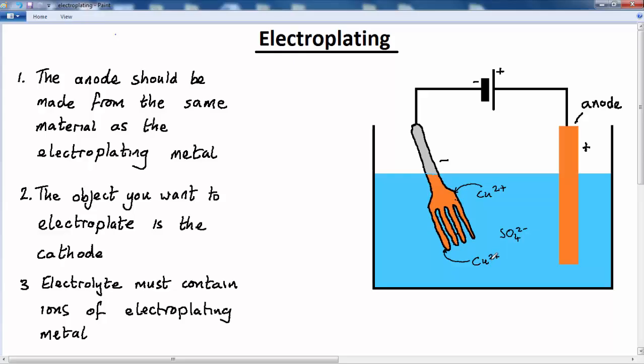And as the copper two plus ions are used up in the copper sulphate solution, the copper anode will start to dissolve in the solution to replace the copper two ions that have been used up. So this copper anode will slowly start to dissolve as the copper atoms form copper ions and move into the copper sulphate solution. As they do so, they will give up two electrons and those electrons will then pass around the circuit through to the fork and will be picked up by the copper ions as they stick to the surface of the fork.